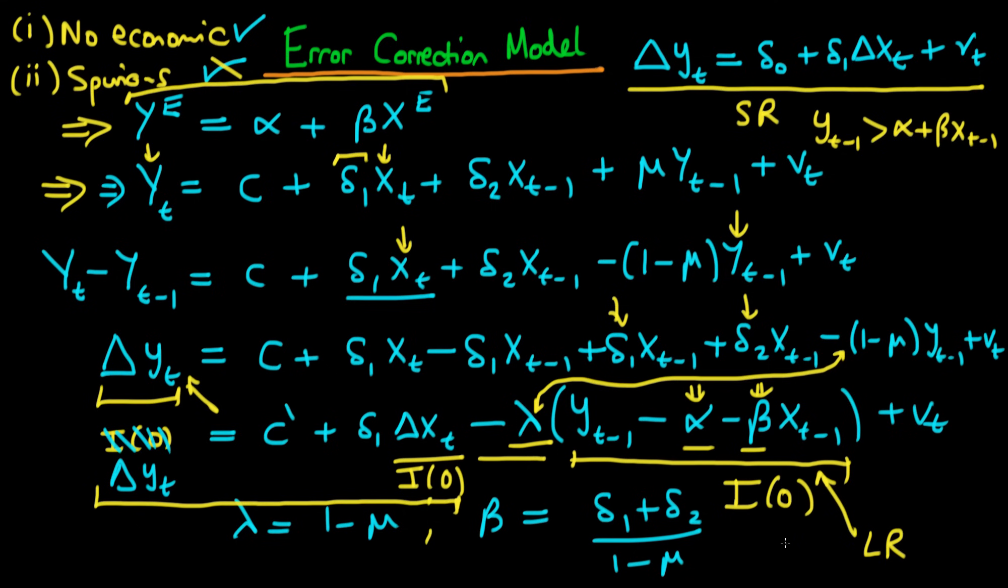Essentially it allows there to be some sort of long run co-integrated relationship between yt and xt. So the idea here is that the parameter lambda actually tells us the speed at which our variable adjusts to any sort of disequilibrium. So the reason these models are highly favoured is because they allow for both interaction between short run and long run dynamics.